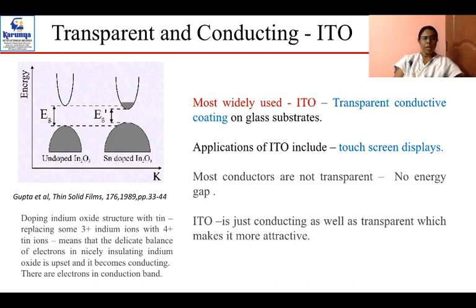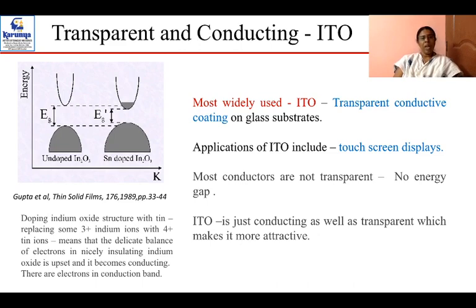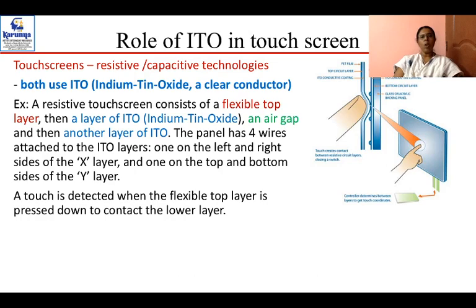This imbalance converts the material into a conductor, with electrons present in the conduction band as evidenced in the image. Physicists note that most conductors are not transparent because they lack an energy gap between the conduction and valence bands. ITO is unique — it is both conducting and transparent — and this combination is what makes ITO especially attractive.